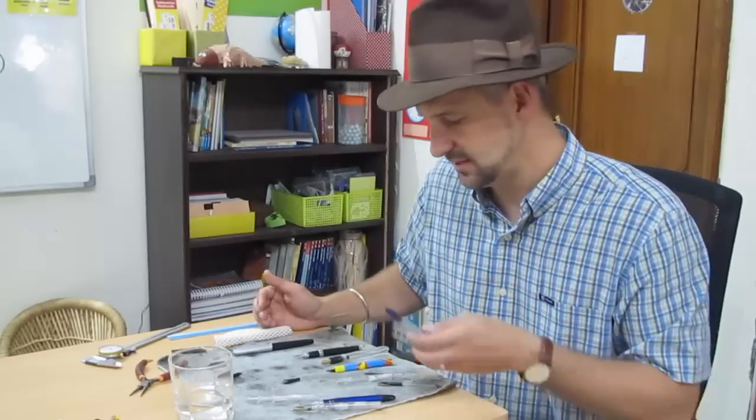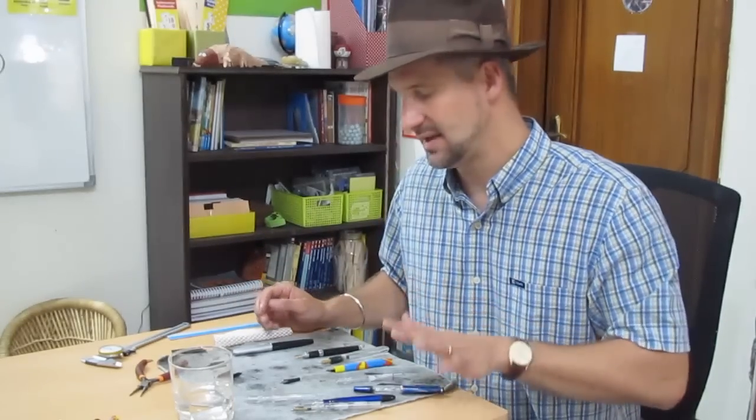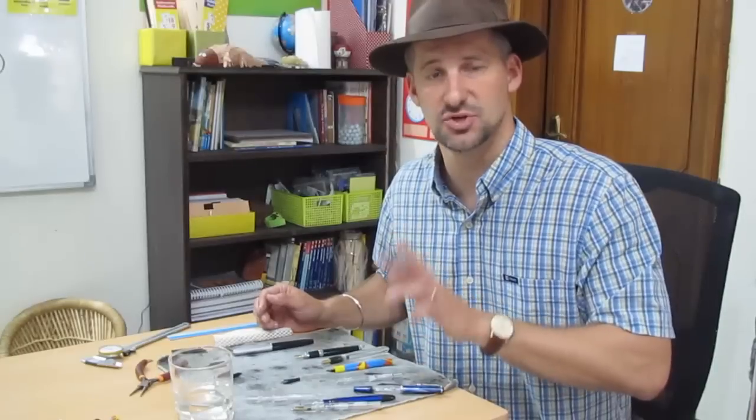Let's talk about putting the nib and the feed back in. Now the first thing you're going to need to know is what sort of nib, what size nib, and what size feed you're going to need. Now the nibs and the feeds that we have come in two different varieties.